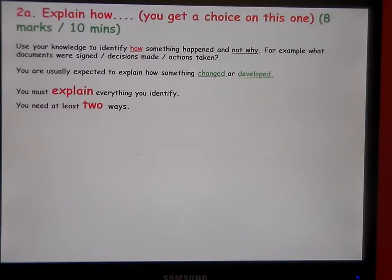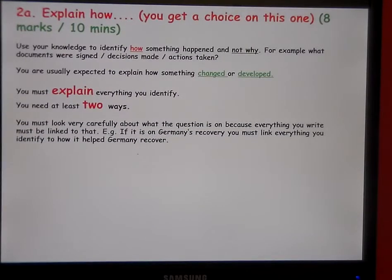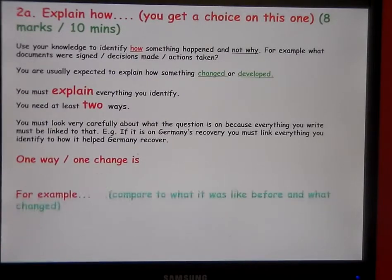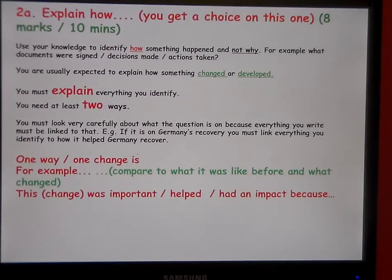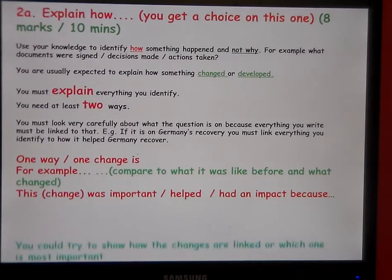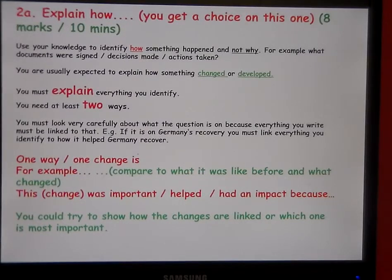So 1C, 1D and 2A or 2B, it's always two examples that are explained. You've got to look carefully about the wording in the question because everything you write must be linked to that. So one way or one change is, for example. And it's really important that you provide a comparison to what it was like before and what changed. And then this change, if it uses the word change in the question, was important or helped or had an impact or was bad because.